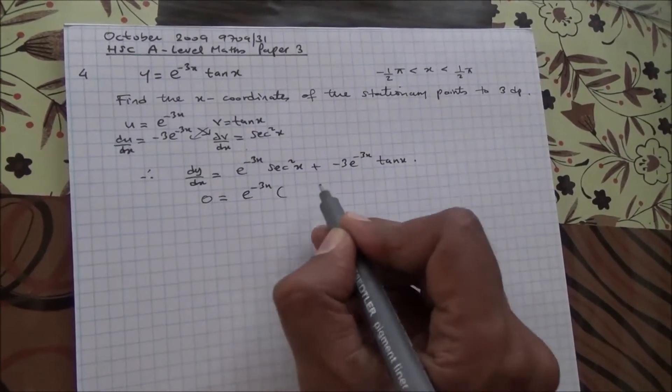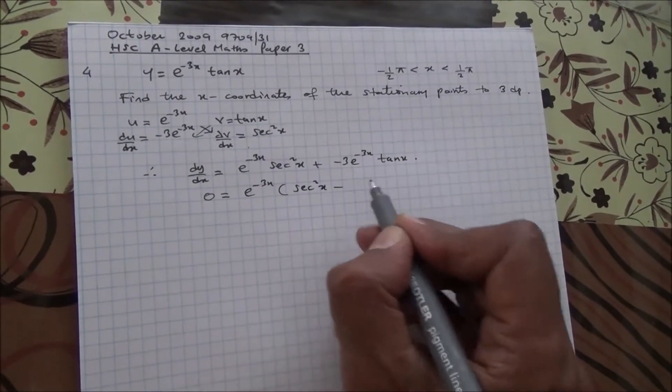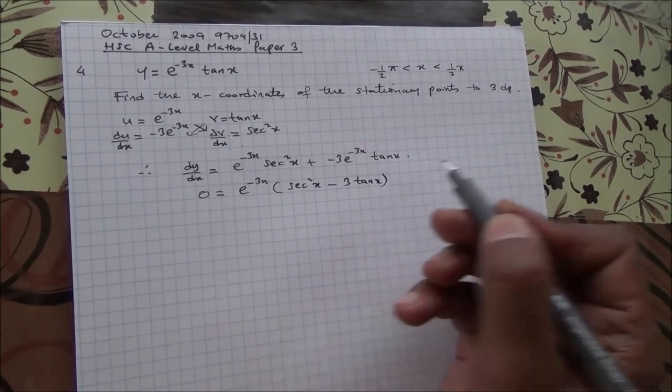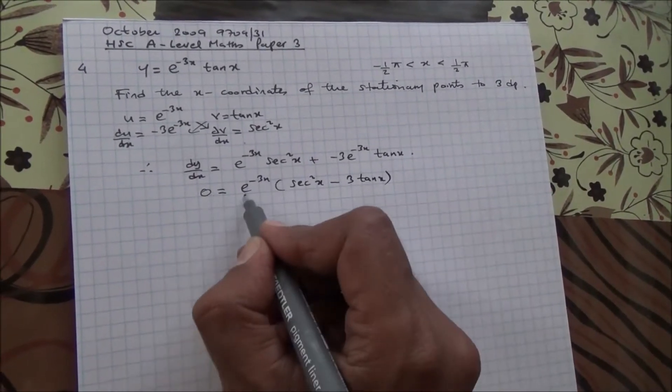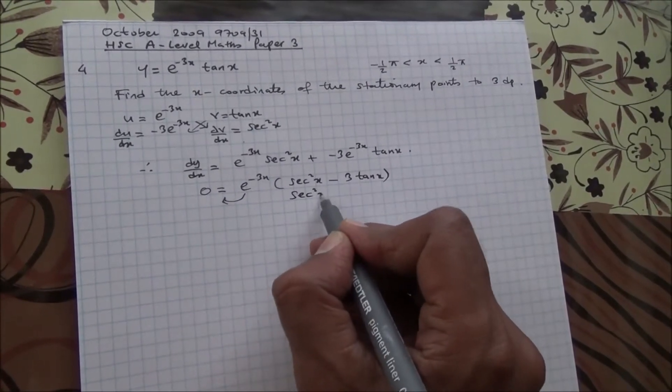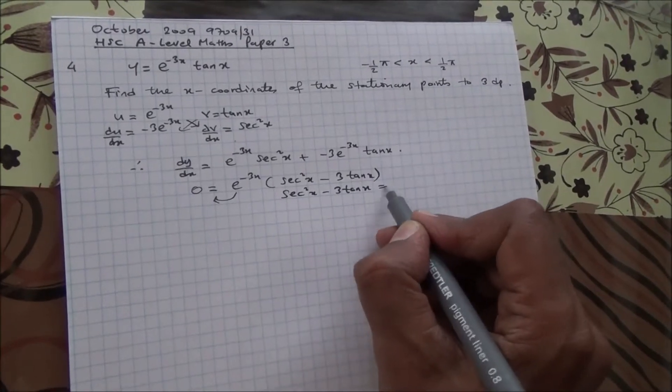e to the power of minus 3x is common. And inside, what we've got is sec squared x minus 3 tan of x. And this can come on that side and therefore it disappears. We're left with sec squared x minus 3 tan x is equal to zero.